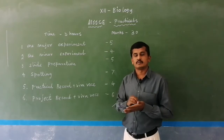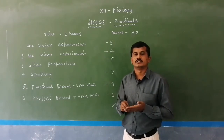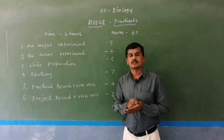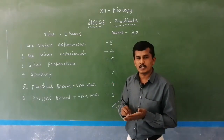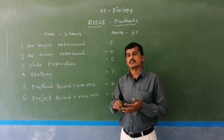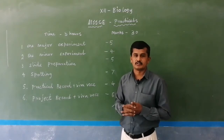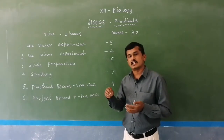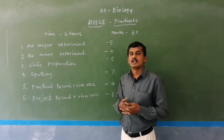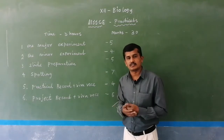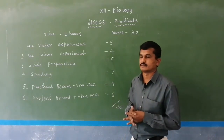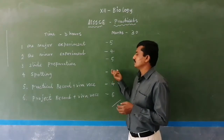The next one: your practical record notebook plus, according to the record notebook, the external examiner may ask viva questions. The record notebook plus viva questions carries four marks. The project record plus viva means five marks. We are already circulating record notebooks. I will give an explanation about how to write your exam record notebook and what points should be in the record notebook in the next section.